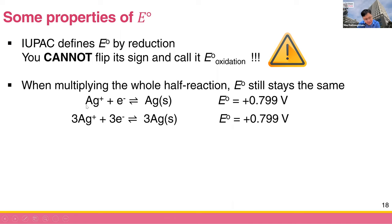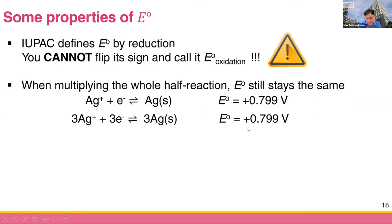The second property: when you multiply a half-reaction by a coefficient, the E-zero still stays the same. For example, silver-ion/silver has E-zero = +0.799 V. If you write three silver-ions plus three electrons giving three silver solid, the standard electrode potential is still +0.799 volt — unchanged. We can verify this in examples later.